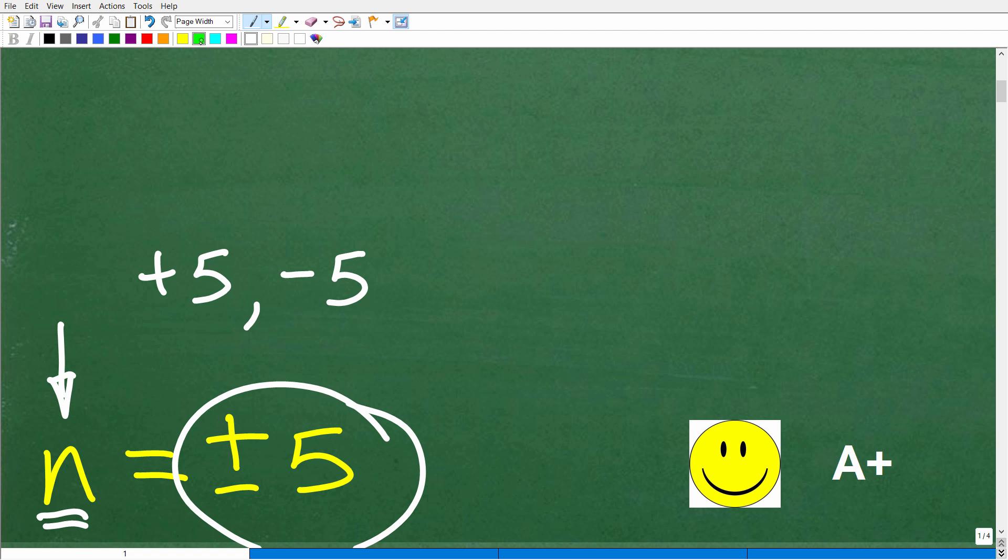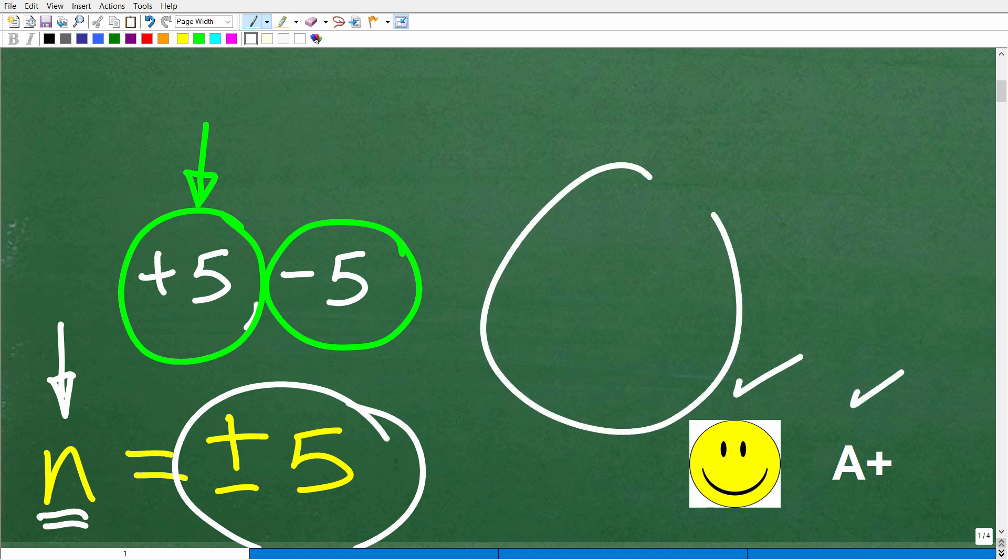A lot of people likely just answered with positive 5 as the answer, but if that is your only solution, you are only 50% correct, because negative 5 is an answer as well. If you got this right, you definitely get a happy face and an A plus. And if you're confused and need help, I definitely can help you out.